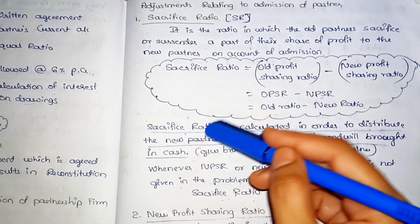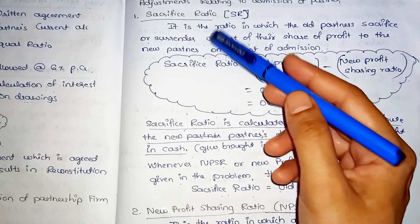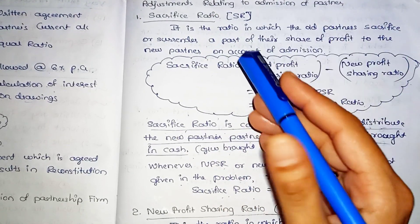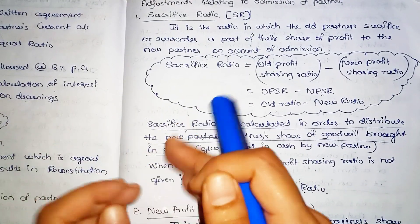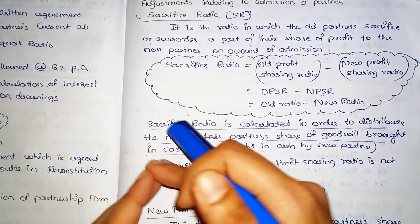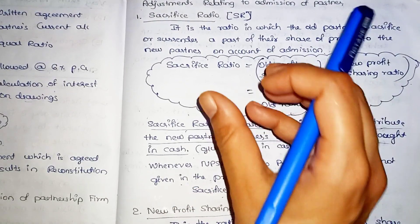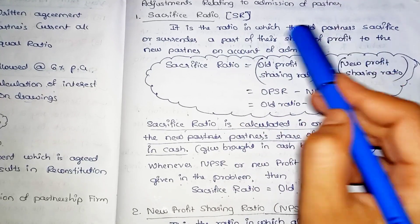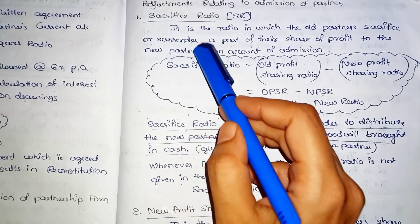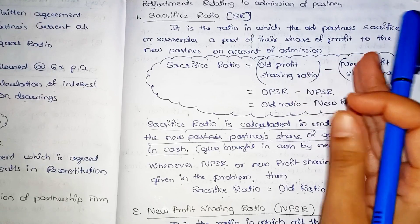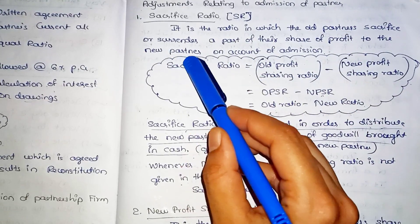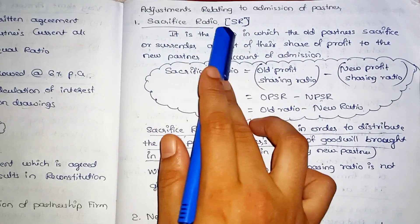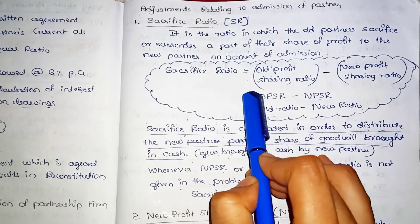Next is Adjustment Relating to Admission of Partner. The first thing is Sacrifice Ratio. Sacrifice Ratio means to sacrifice. When a new partner is admitted, the old partners give up part of their share of profit to the new partner. It is the ratio in which the old partners sacrifice or surrender a part of their share of profit to the new partner on account of admission. This is the Sacrifice Ratio.